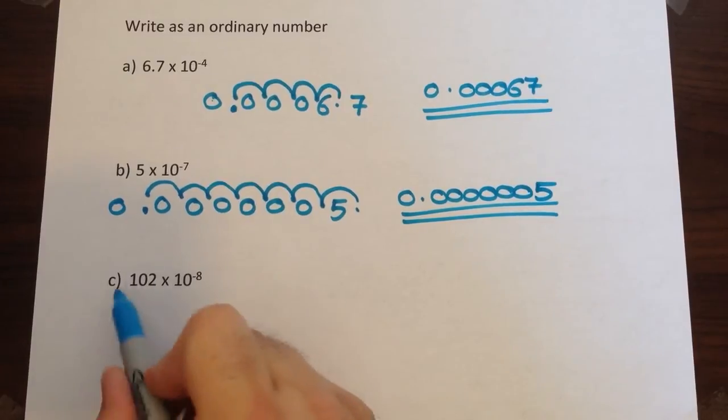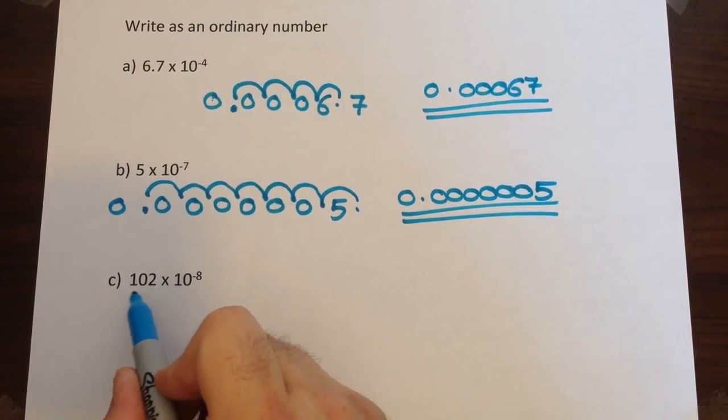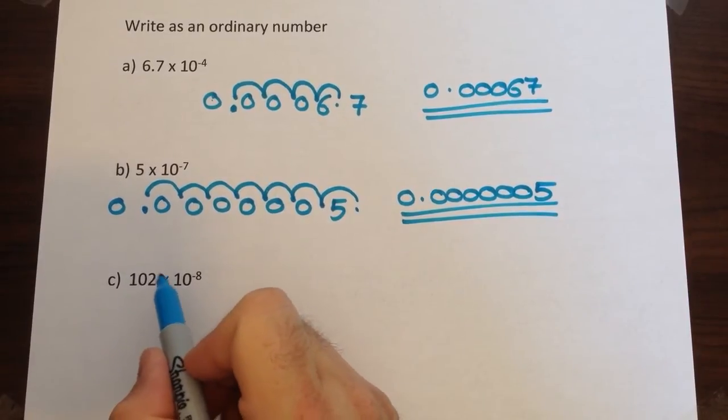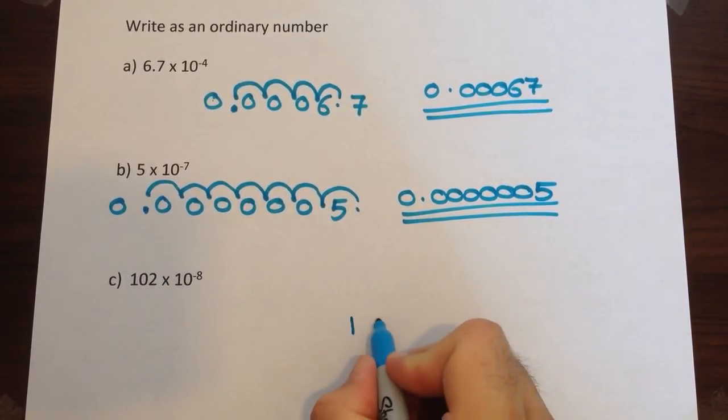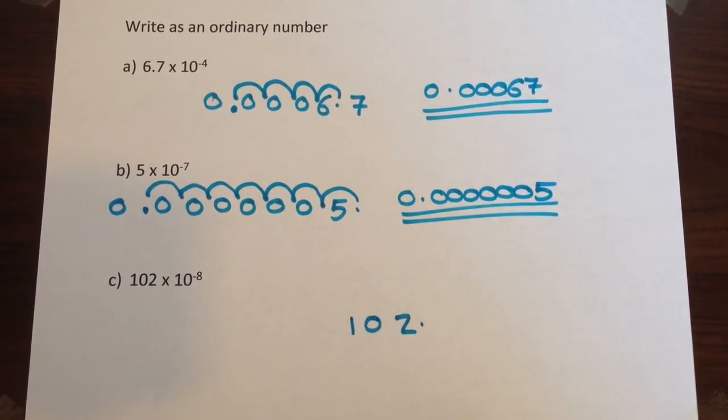Quite often the exam board will put in numbers that aren't written correctly in standard form and ask you to convert them either to standard form or back to ordinary numbers. So let's look how we would do that. Start with 102. The decimal point would be there on the end, it's just not shown, and we're going to jump eight places to the left.